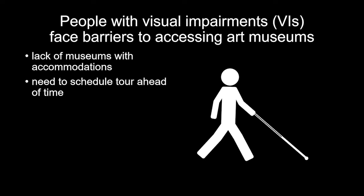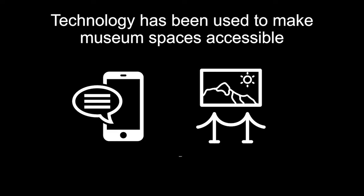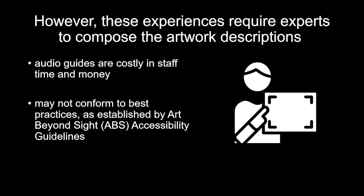People with visual impairments face barriers to accessing art museums, including a lack of museums with accommodations for them, and often when there are accommodations, you need to schedule a tour ahead of time, which doesn't allow for spontaneous visitation. Technology has been used to make museum spaces accessible, but it's not widespread and requires experts to compose the artwork descriptions. Audio guides are costly in terms of staff time and money, and they may not conform to best practices as established by the Art Beyond Sight, or ABS, accessibility guidelines.